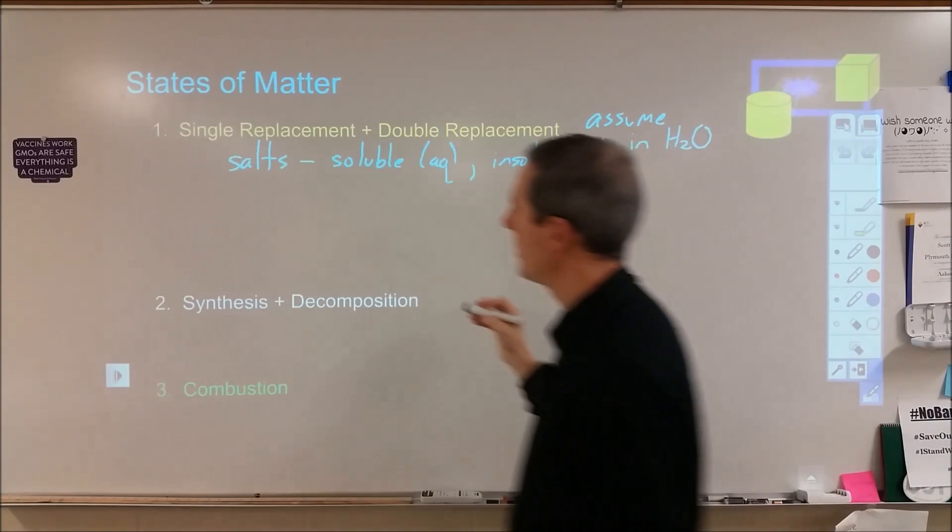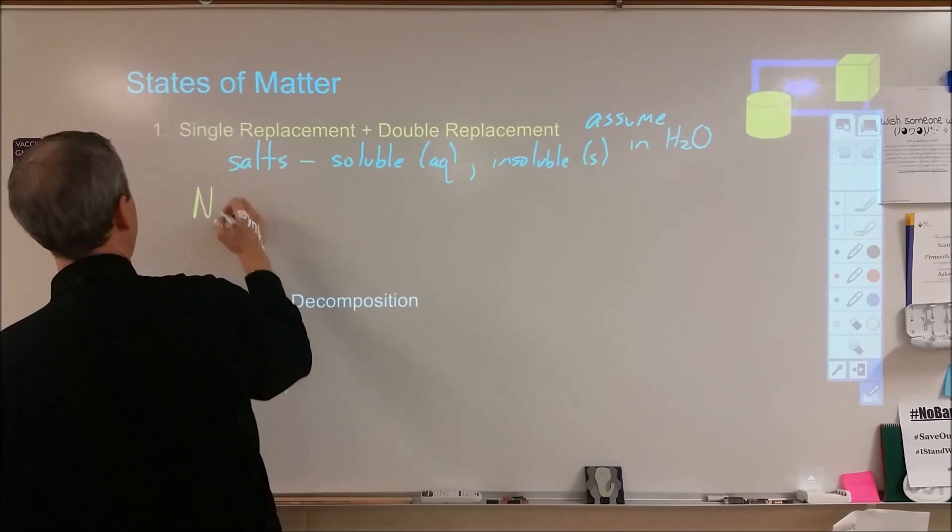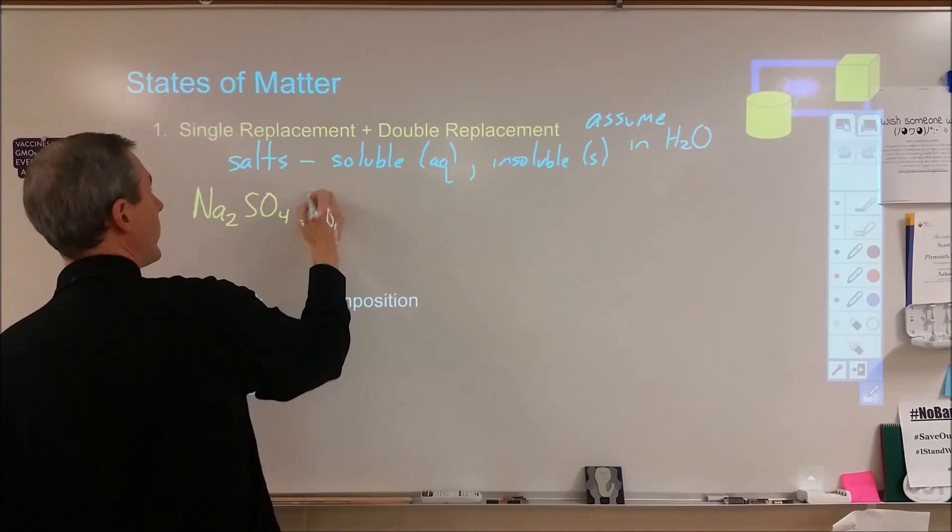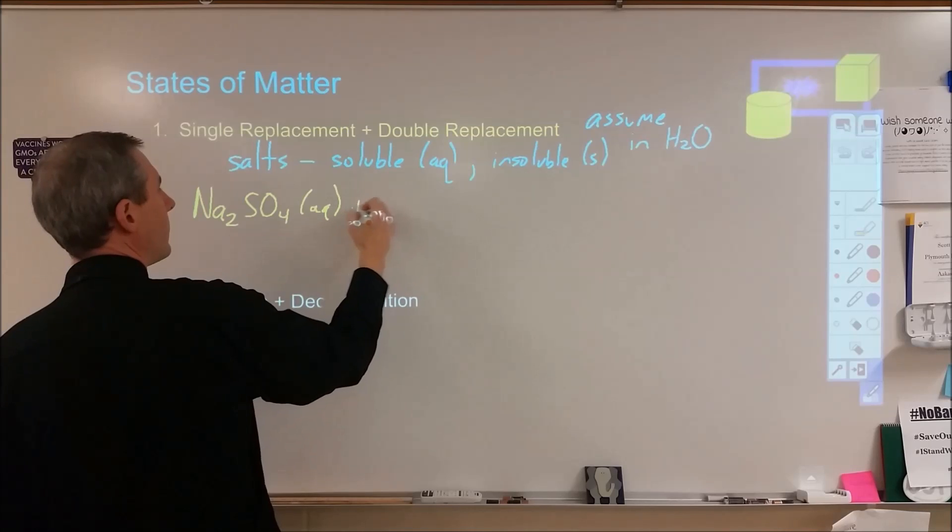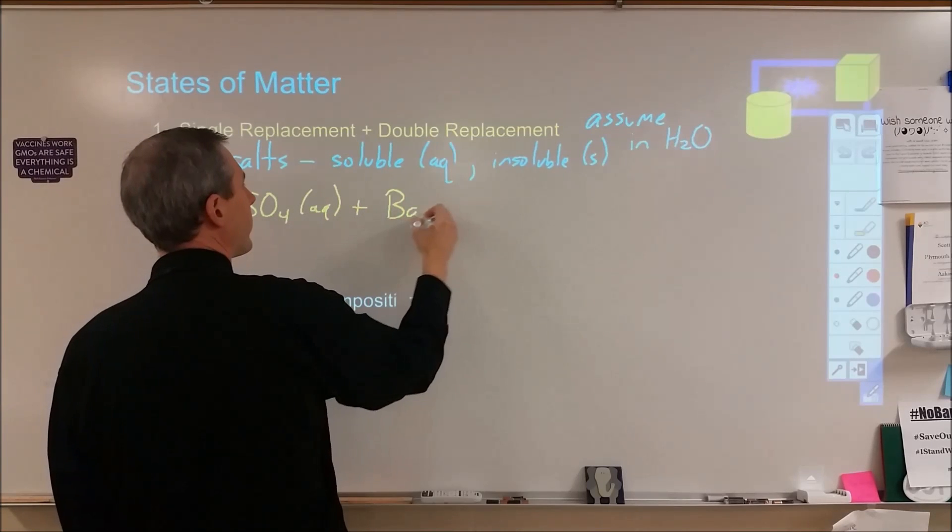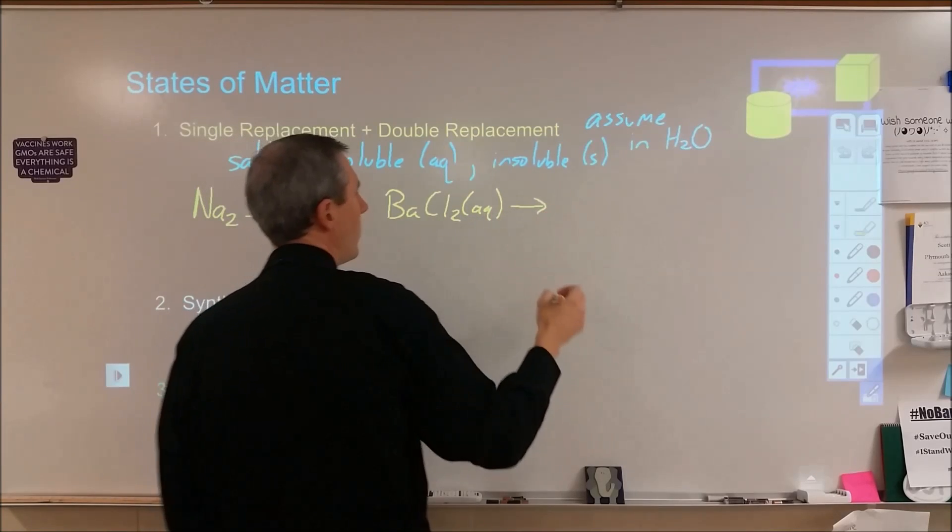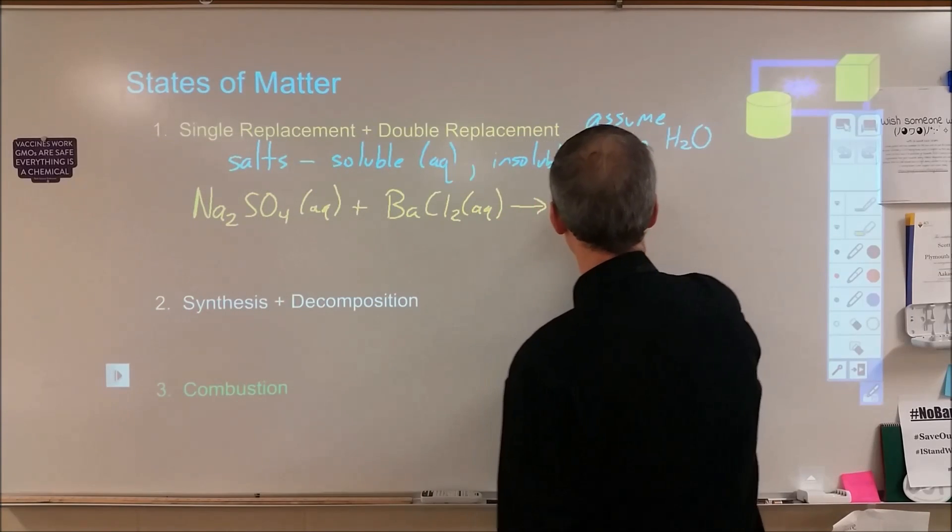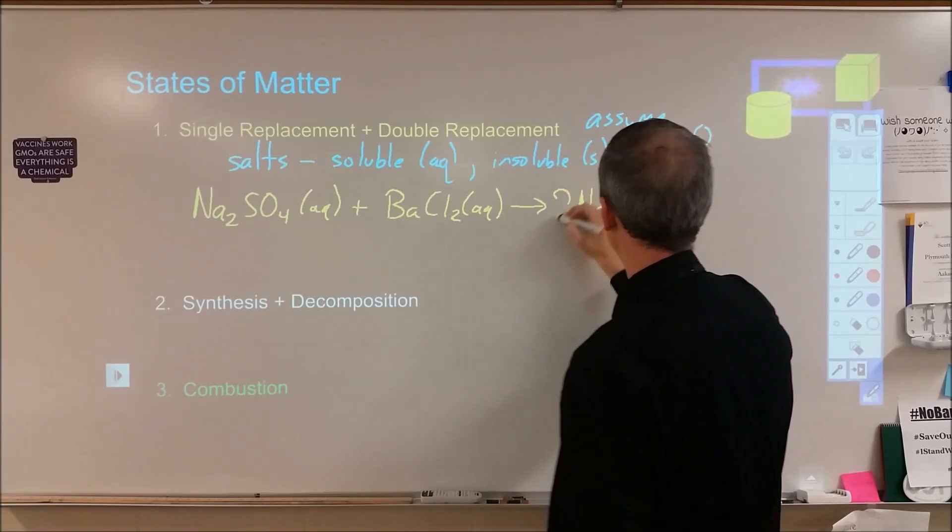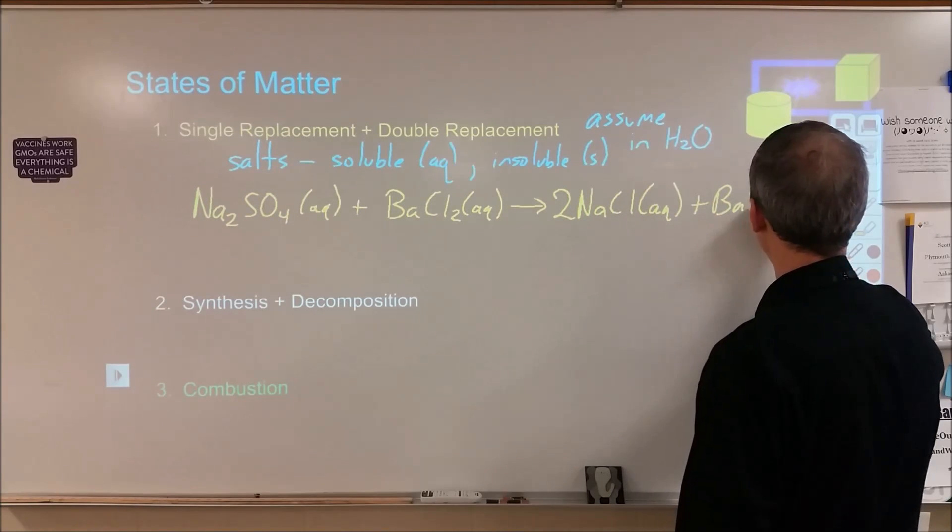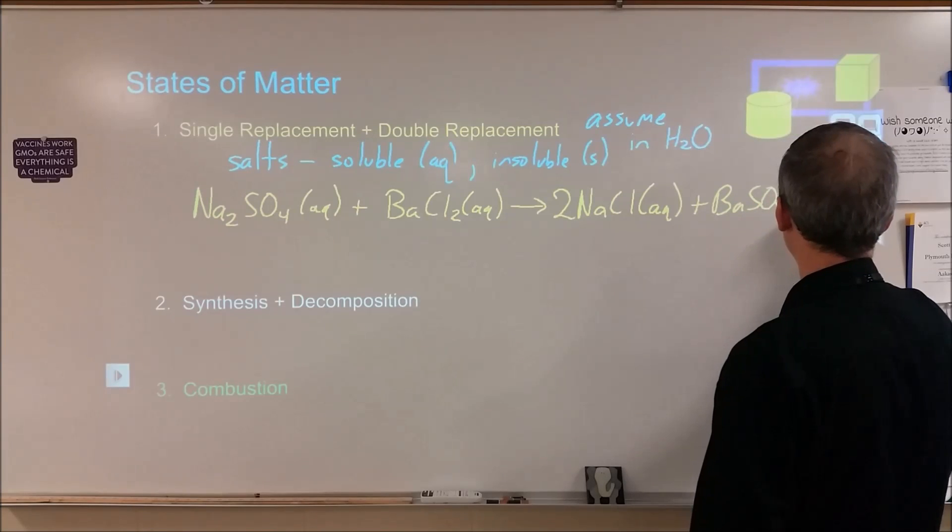If I take a simple example here, I'm going to take sodium sulfate, Na2SO4. That's something soluble in water. We're assuming it's in water, so we're going to put aqueous. And let's take barium chloride, BaCl2, which is also soluble in water. When we mix the two, we're going to form sodium chloride, NaCl, which is of course soluble in water, so it's going to be aqueous. And we're going to form barium sulfate, BaSO4, which is insoluble in water, so we're going to put solid.